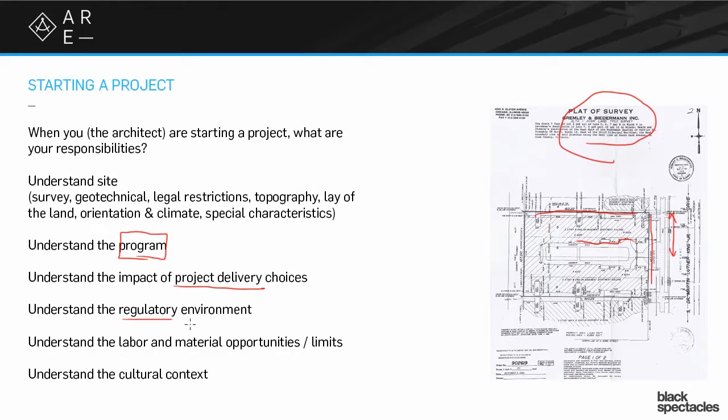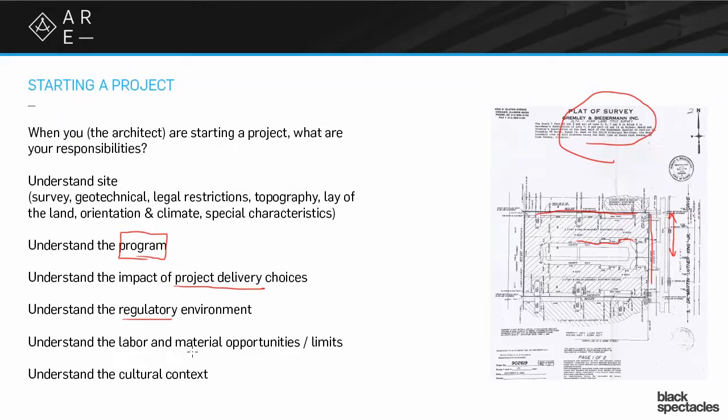Understanding the regulatory environment is another interesting one, because regulatory elements can obviously have a tremendous impact on the possibilities of a site. If someone comes to you with a program for a 20,000 square foot building, and you look at the zoning code and it says you can only build 10,000 square feet on that site, clearly there's something about the regulatory environment and the program that aren't meeting each other. That's very important to catch in these early planning phases and not many months down the road when lots of dollars and time have been spent.